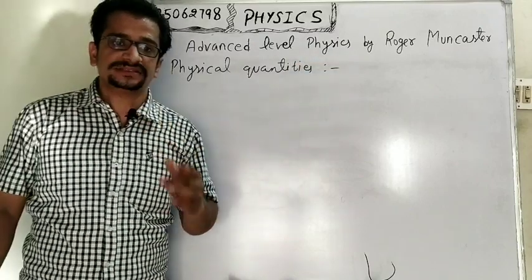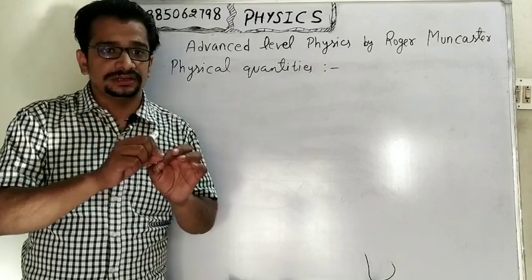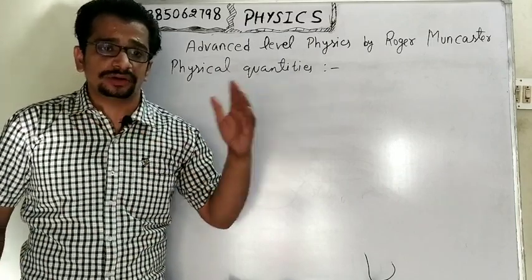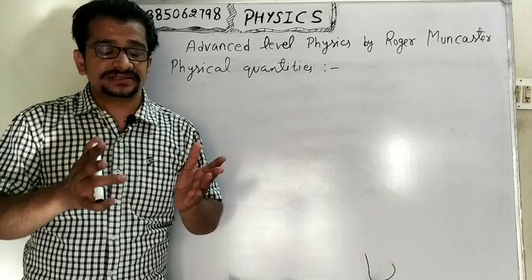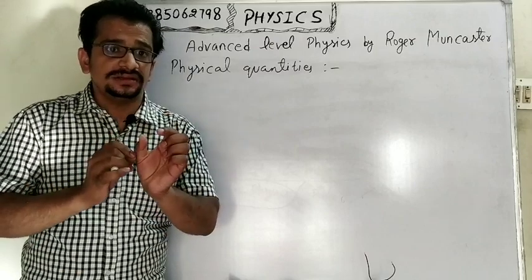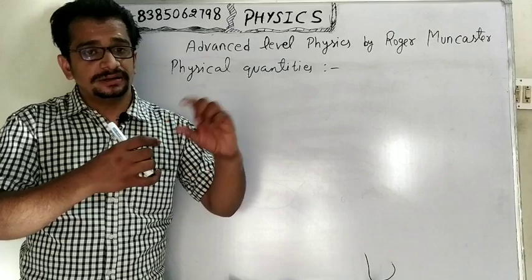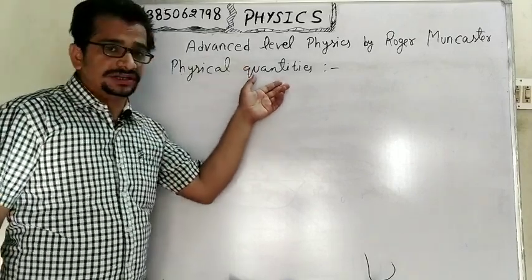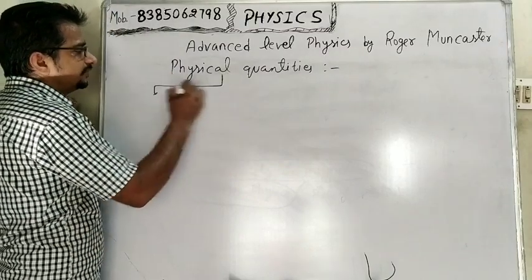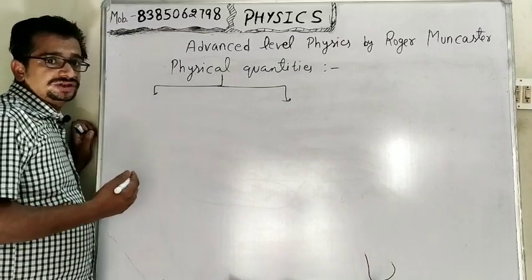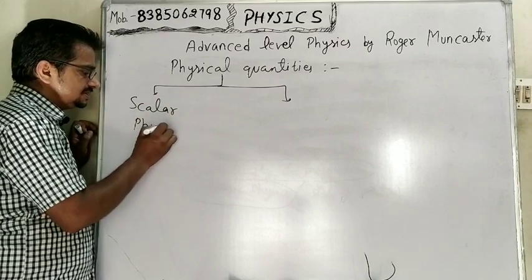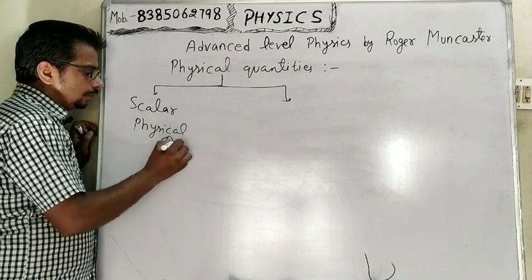Force, tension, gravitational force, acceleration, speed, and length are all physical quantities, which are measured to study the concepts of physics. Everything that can be measured completely is known as a physical quantity. There are two types of physical quantities on the basis of direction and value: the first is scalar physical quantities.